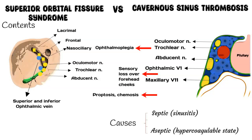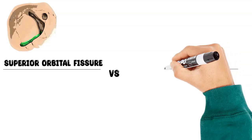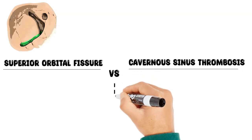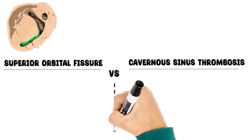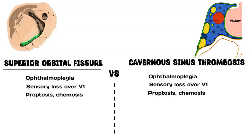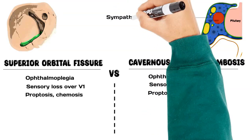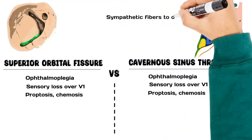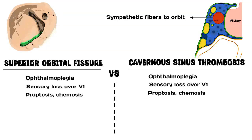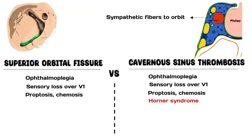Now let's look at the key differences between the two conditions. Both are associated with ophthalmoplegia, sensory loss over the ophthalmic division of the trigeminal nerve, as well as proptosis and chemosis. However, the sympathetic fibers travel with the internal carotid artery inside the cavernous sinus, so cavernous sinus thrombosis is frequently associated with Horner syndrome.